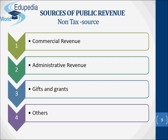Concerning administrative revenue, the receipts of income accrued on account of performing administrative functions by the government are called administrative revenue. According to Professor Seligman, a fee is a payment to defray the costs of each recurring service undertaken by the government in the public interest. Fees are payments imposed by the government — for example, court fee, license fee, passport fee, etc. Fines and penalties are imposed on persons as a punishment for infringement of laws; they are imposed to prevent crime and are arbitrarily determined.